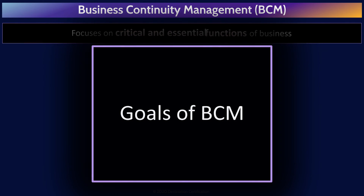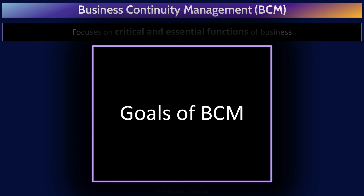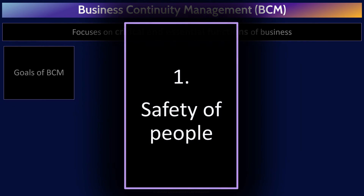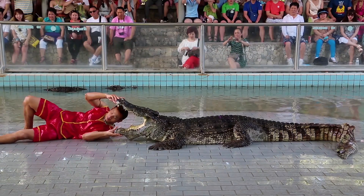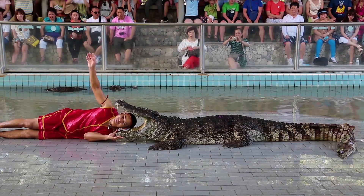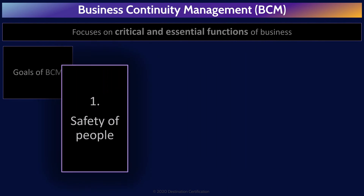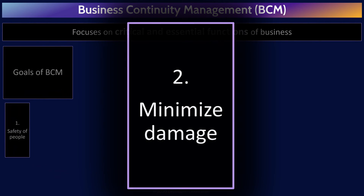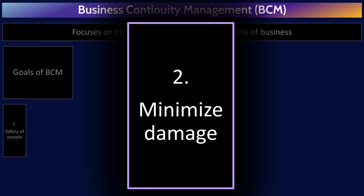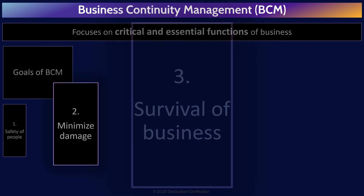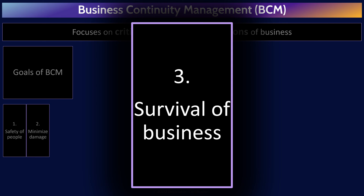In business continuity management, we need to determine what business processes and systems are most critical, and focus our limited resources on those most critical systems and processes during a disaster. There are three major goals of business continuity management, and you need to remember them in this order. Number one, the most important goal, is safety of people. People are the most valuable asset to an organization, and without people there will be no organization. Number two is to minimize the impact and damage caused by the disaster, so that three, we can help ensure the survival of the business.